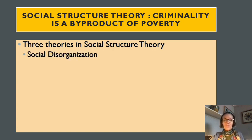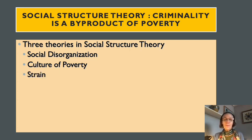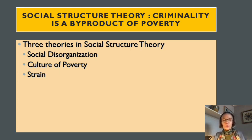Within social structure theory there are three main sub-theories: social disorganization, the culture of poverty, and strain theory. Let's look at each of these individually.